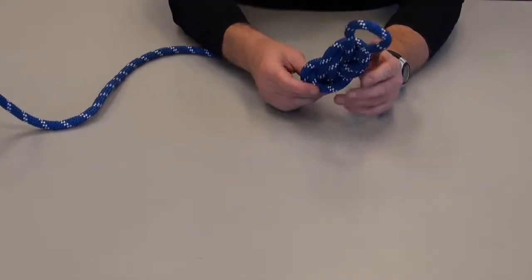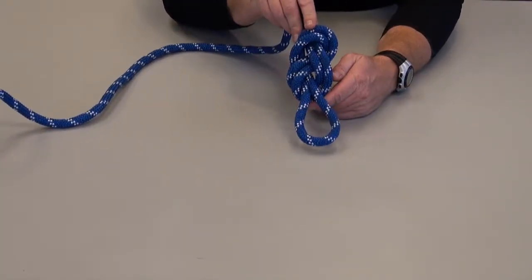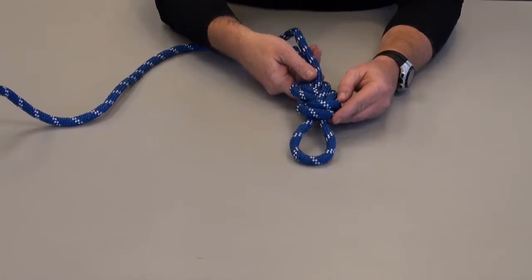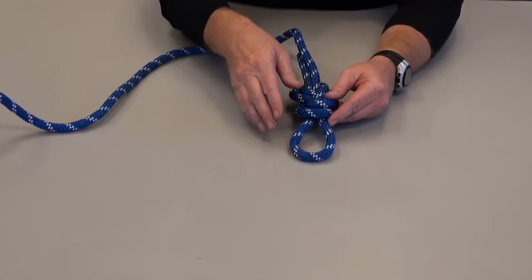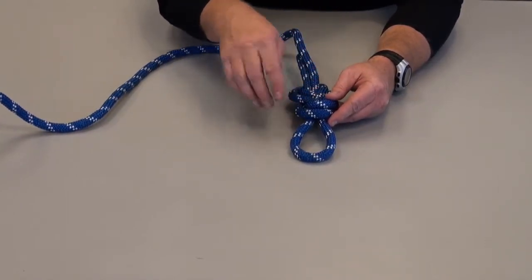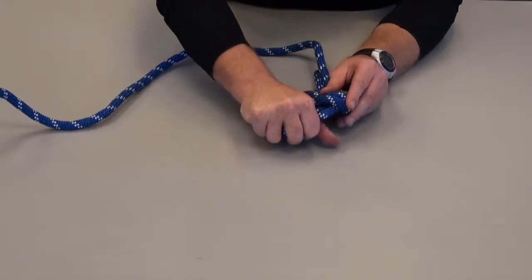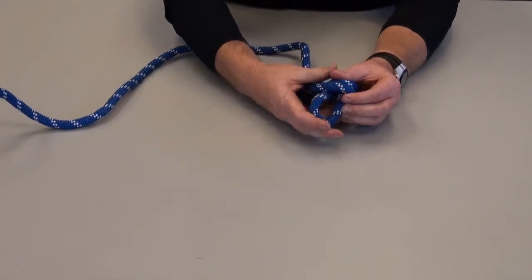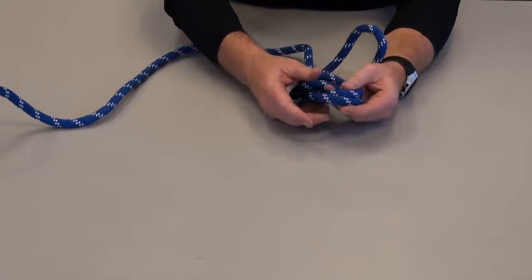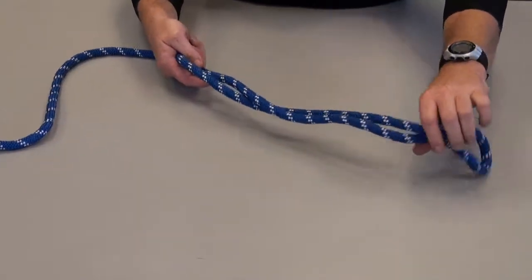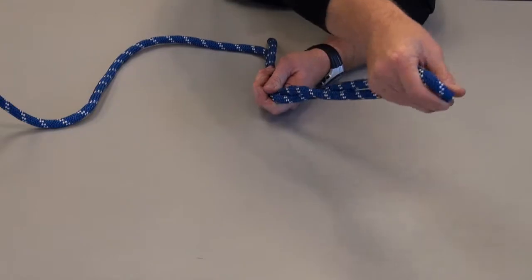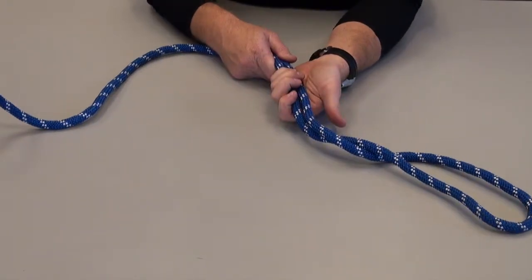The result of that figure eight follow-through is, in theory, a figure eight on a bight. The figure eight on a bight can also be configured as itself with a bight of rope. The typical application for the figure eight on a bight is as one of the primarily used attachment points for the ends of our rope to fixed elements such as carabiners.